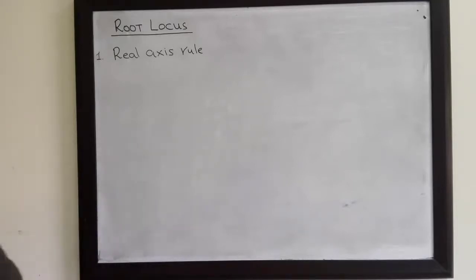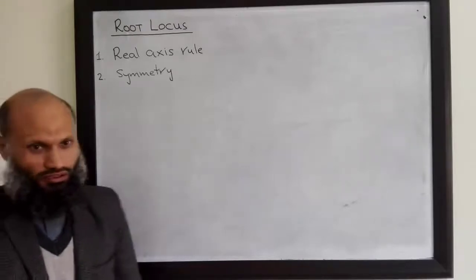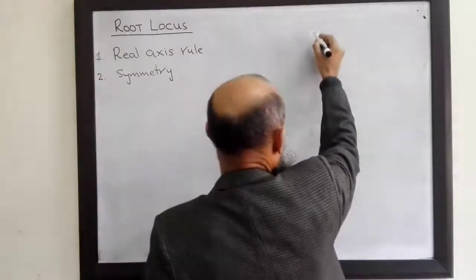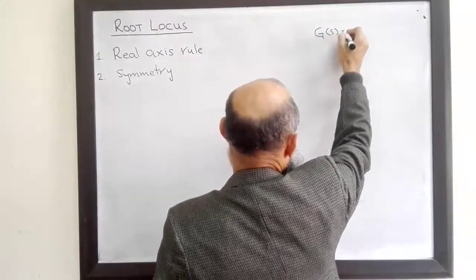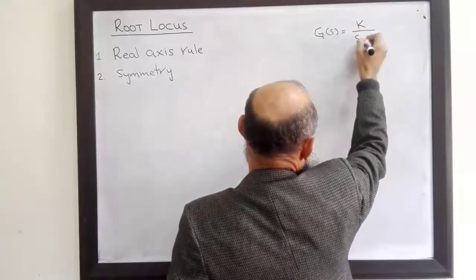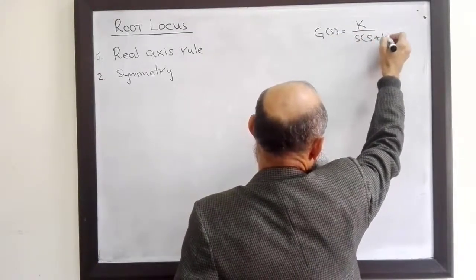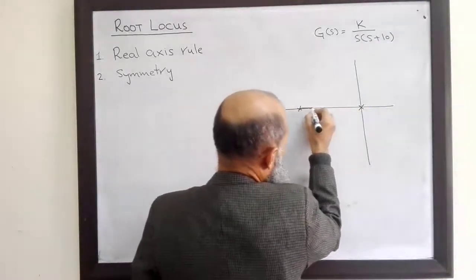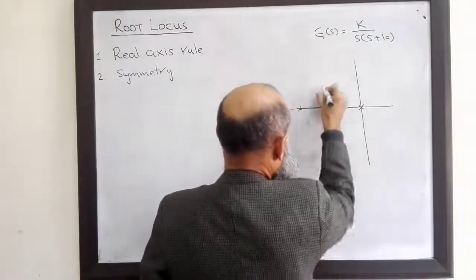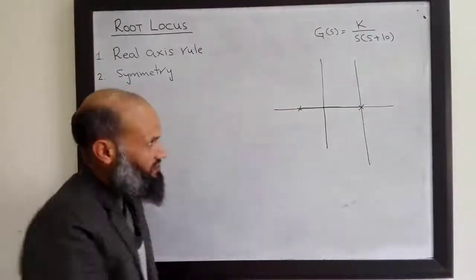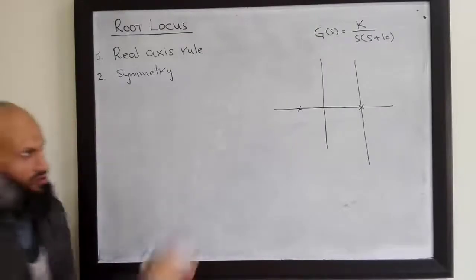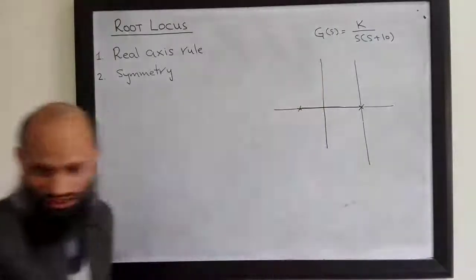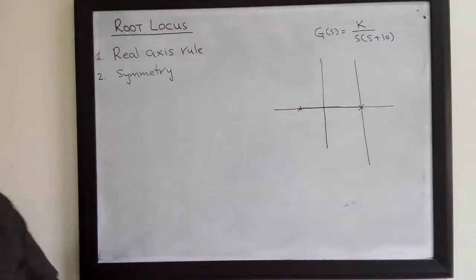The next rule is symmetry — the root locus is symmetrical about the horizontal axis. We remember the example from the last lecture: the shape of the root locus is symmetrical about the horizontal axis. Whatever is the shape below this axis, the same is the shape above this axis.